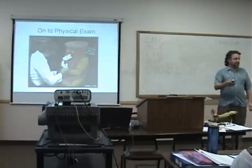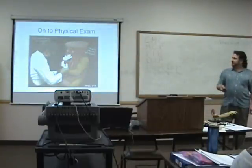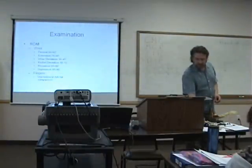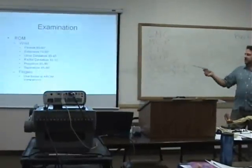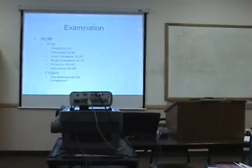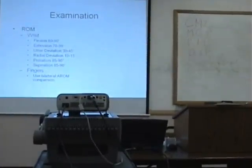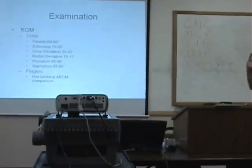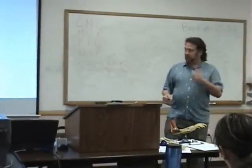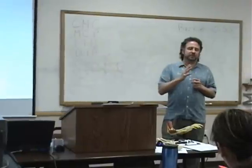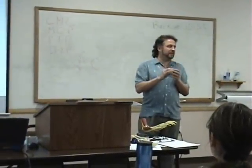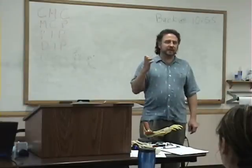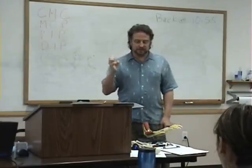Now we're going to go on to the physical exam. For range of motion at the wrist: flexion is 80 to 90 degrees, extension is 70 up to 90 degrees. You have ulnar deviation and radial deviation. Pronation and supination are really part of the elbow. For fingers, it's pretty rare to measure them with a goniometer — you're usually just going to compare one side to the other, unless you're doing disability evaluations or AMA evaluations, in which case you'd measure all actual finger ranges of motion.